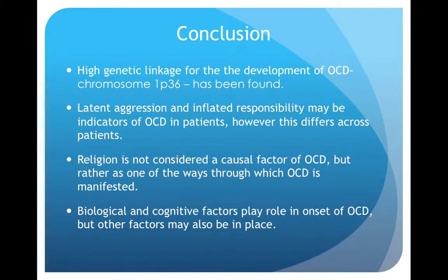To conclude, from the first article, a high genetic linkage for the development of OCD was found, specifically in chromosome 1P36, indicating a possible biological cause. Among the strengths was the large sample size and genetic data generated. The second article suggests that latent aggression and inflated responsibility may be indicators of OCD; however, this may differ across individuals. One limitation was that the enhanced latent aggression versus exaggerated morality hypothesis wasn't supported by empirical studies. The third article suggested that while religion may not be a causal factor of OCD, it was one of the ways OCD was manifested in Saudi Arabian females, though the small sample size indicated low external validity.